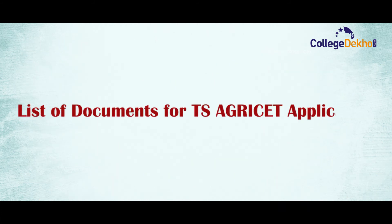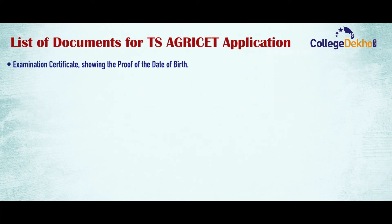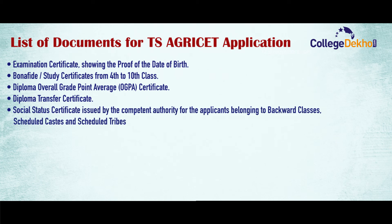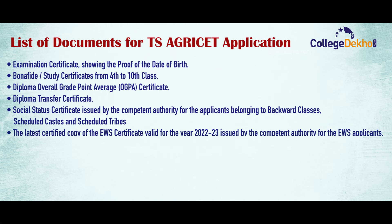Let's check the list of documents you will have to keep ready and upload at the time of application: Examination certificates showing proof of date of birth; Bonafide Certificate or Study Certificates from 4th to 10th class; Diploma Overall Grade Points Average Certificate; Diploma Transfer Certificate; Social Status Certificate issued by the Competent Authority for applicants belonging to backward classes, scheduled caste and scheduled tribes; and the latest certified copy of the EWS certificate valid for 2022-2023 issued by the Competent Authority for EWS applicants.